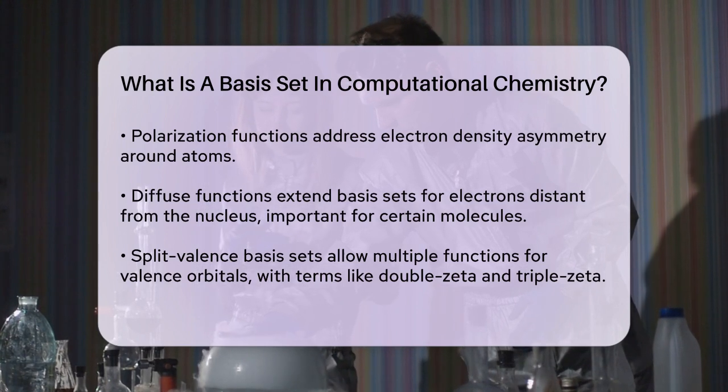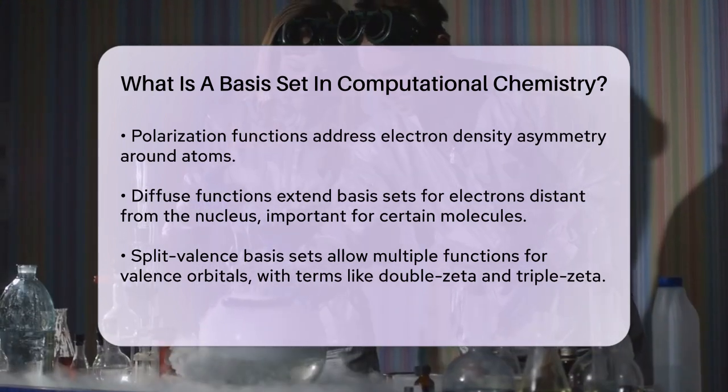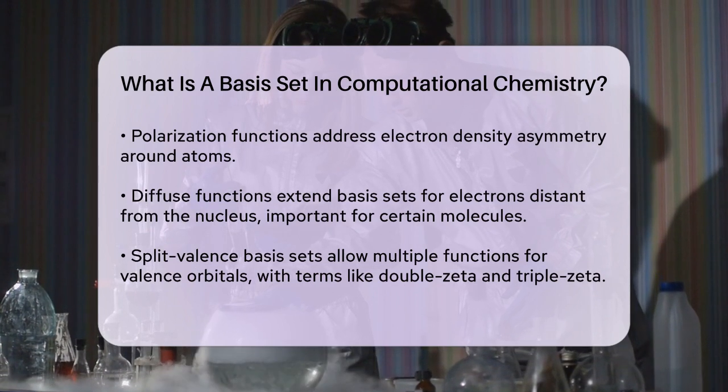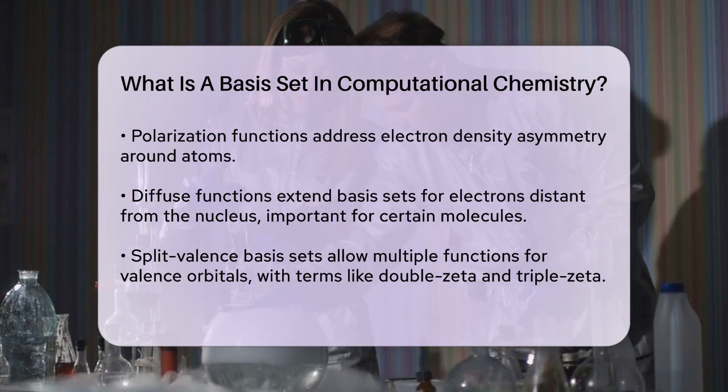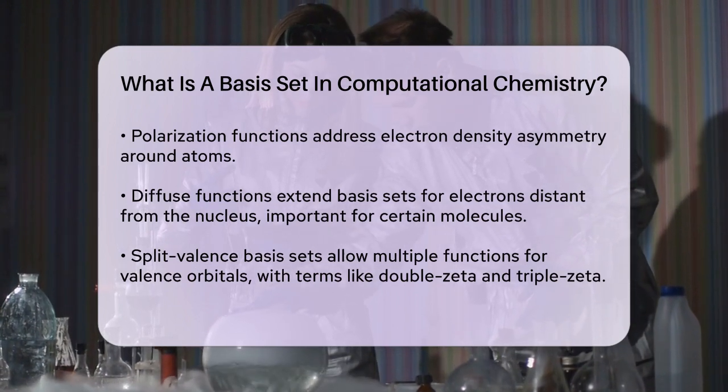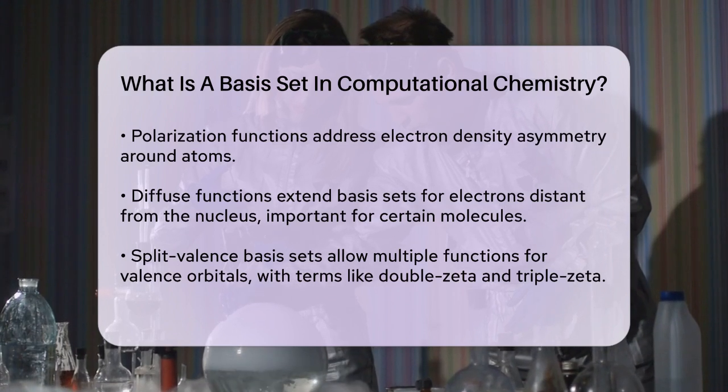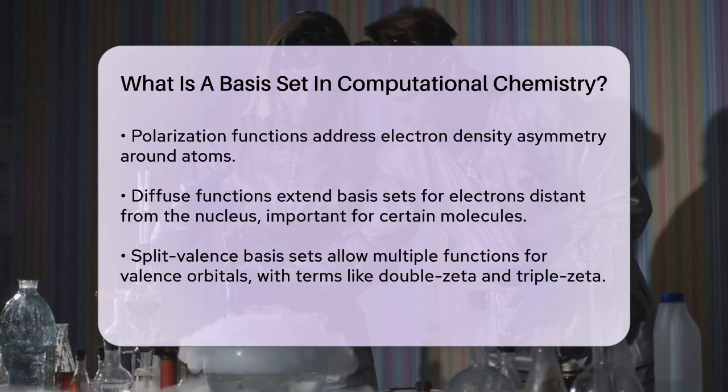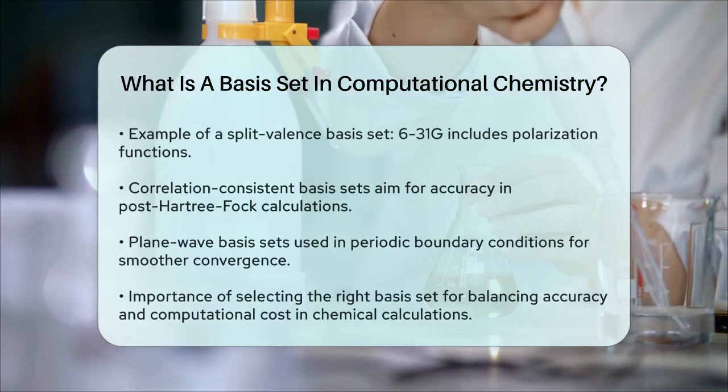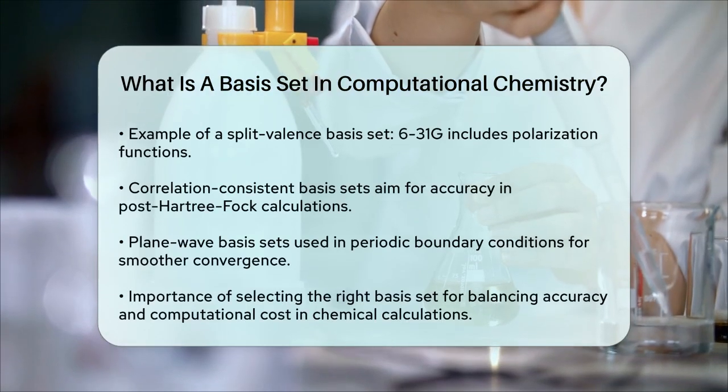Correlation-consistent basis sets, developed by Dunning and coworkers, are designed to systematically converge to the complete basis set limit, making them highly accurate for post-Hartree-Fock calculations. These sets include successively larger shells of polarization functions, such as D, F, G, etc.